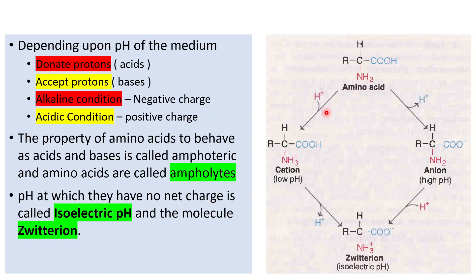Similarly, if we change the pH of the medium and make it acidic, the amino acid will accept a proton and become positively charged. In acidic conditions, the amino acid acquires a positive charge and behaves as a cation.